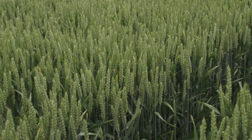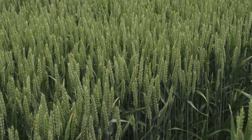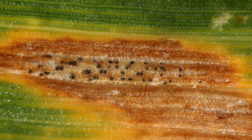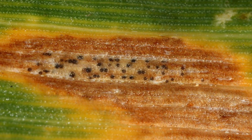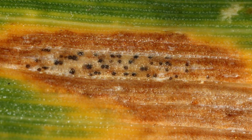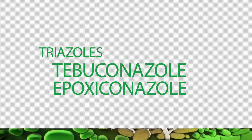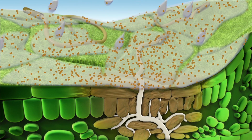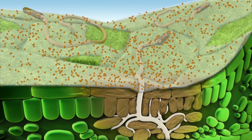Understanding the mode of action of the chemistry available to manage septoria helps us to build the strongest programs, ultimately increasing yield. Triazoles are single-site chemistry but are locally systemic and more mobile in plant tissues than other fungicides.